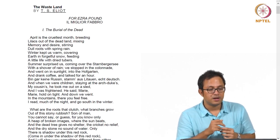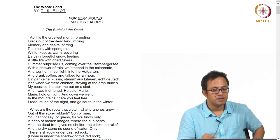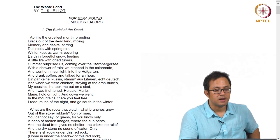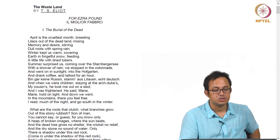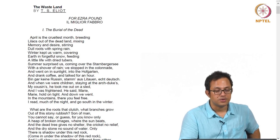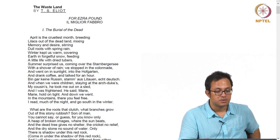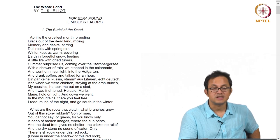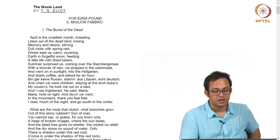April is the cruelest month, breeding lilacs out of the dead land, mixing memory and desire, stirring dull roots with spring rain. Winter kept us warm, covering earth in forgetful snow, feeding a little life with dried tubers. Summer surprised us, coming over the Starnberg Sea, with a shower of rain; we stopped in the colonnade, and went on in sunlight, into the Hofgarten, and drank coffee, and talked for an hour. And when we were children, staying at the archduke's, my cousin's, he took me out on the sled, and I was frightened. He said, Mary, Mary, hold on tight. And down we went, in the mountains, there you feel free. I read much of the night, and go south in the winter.